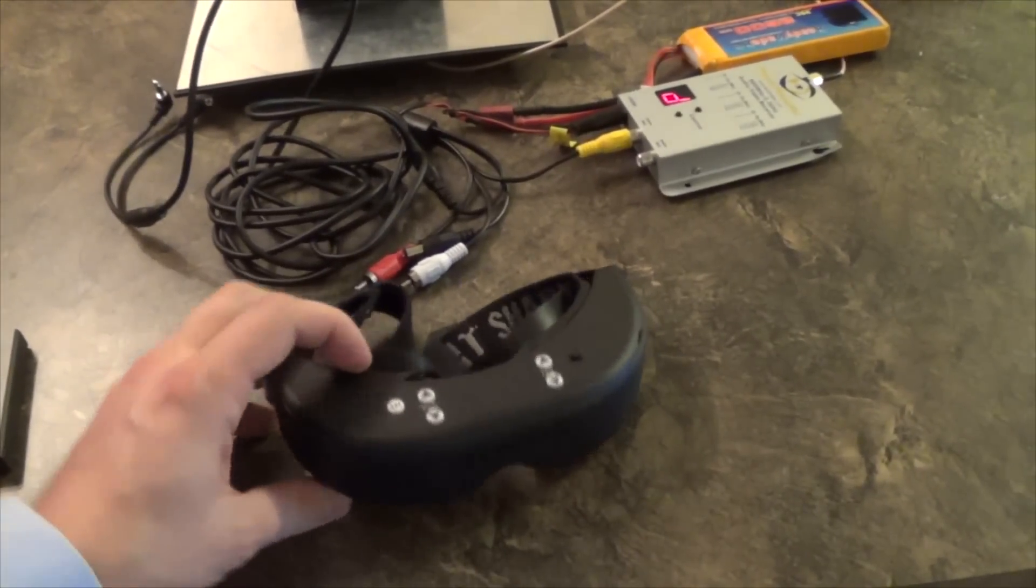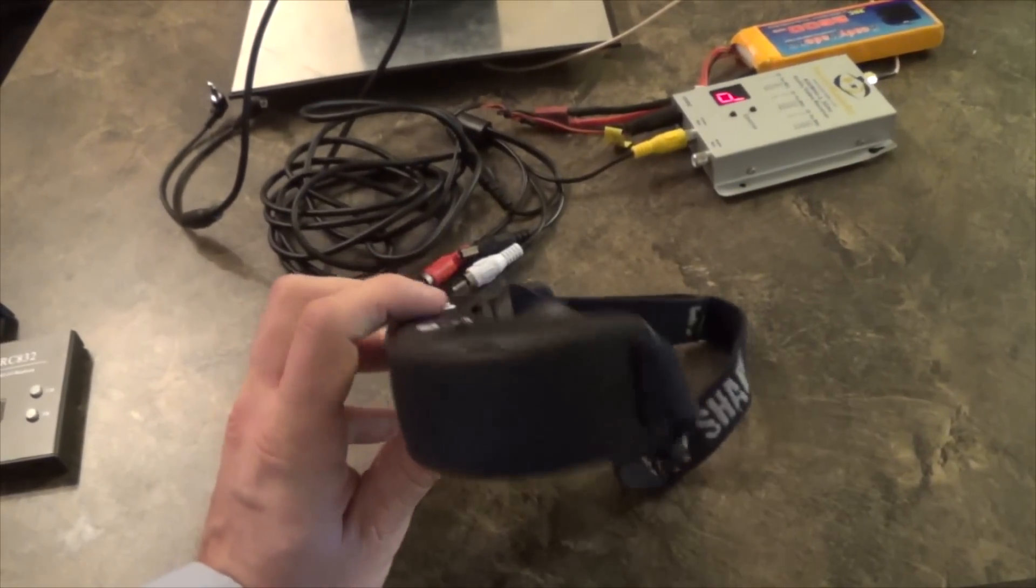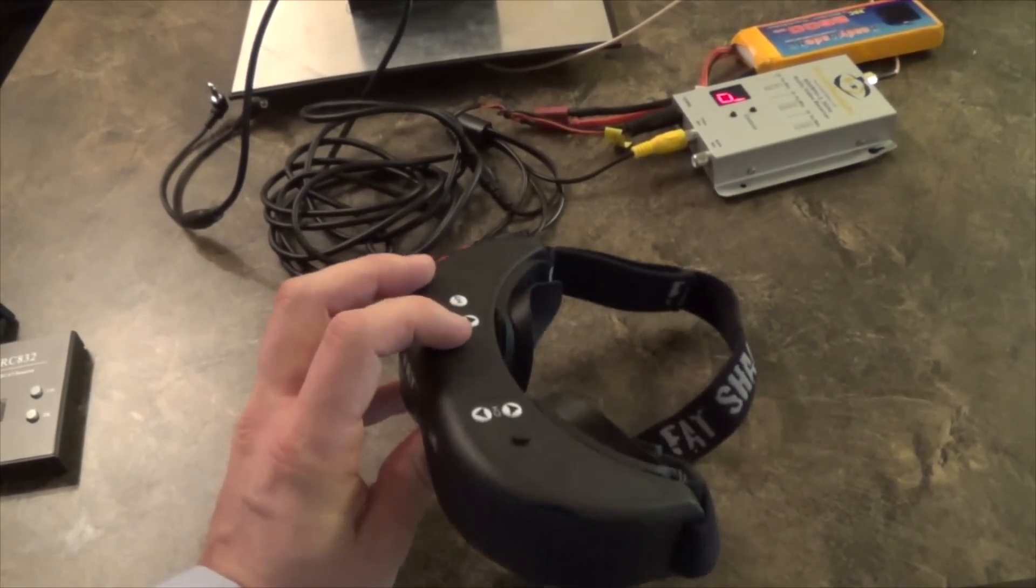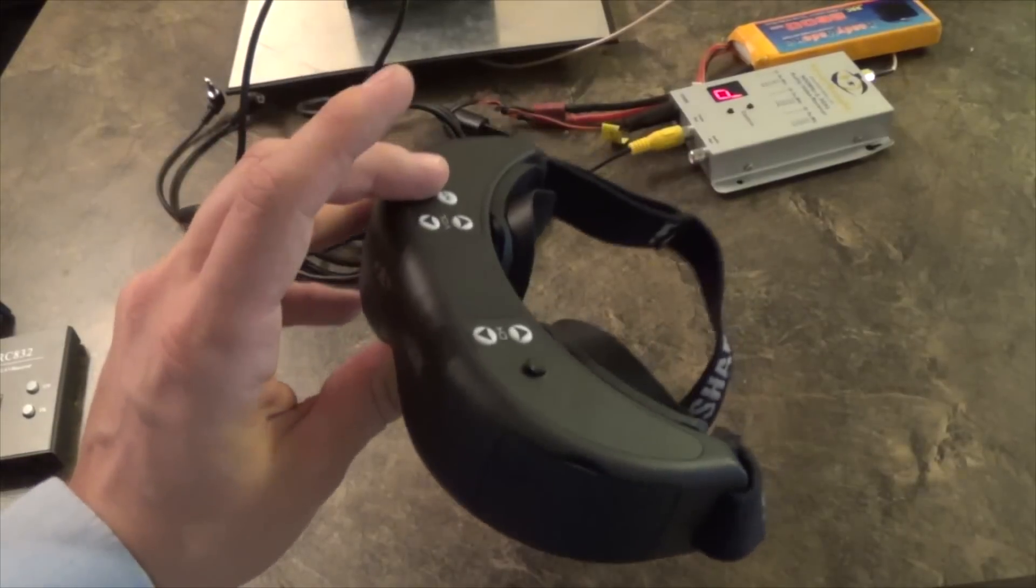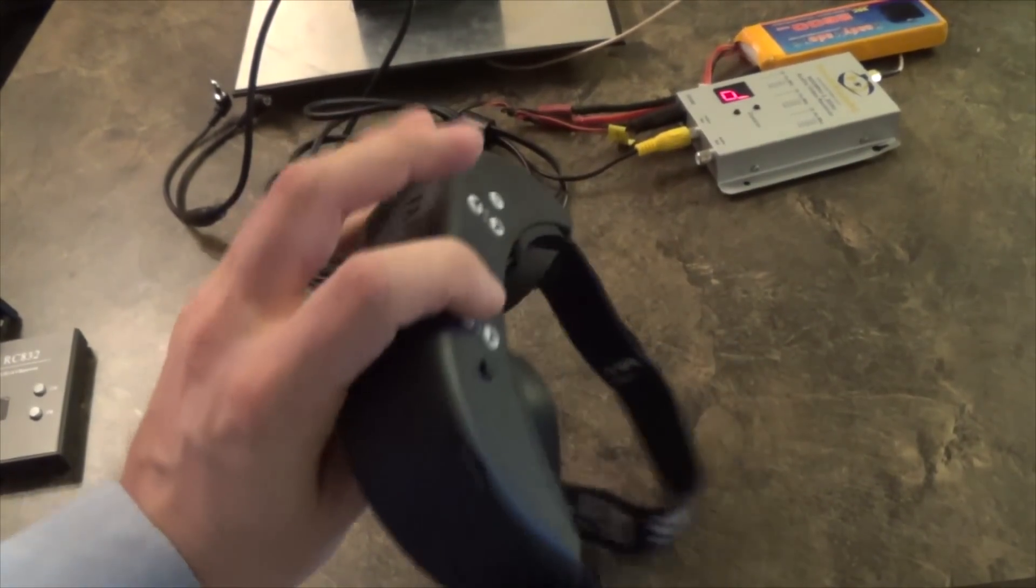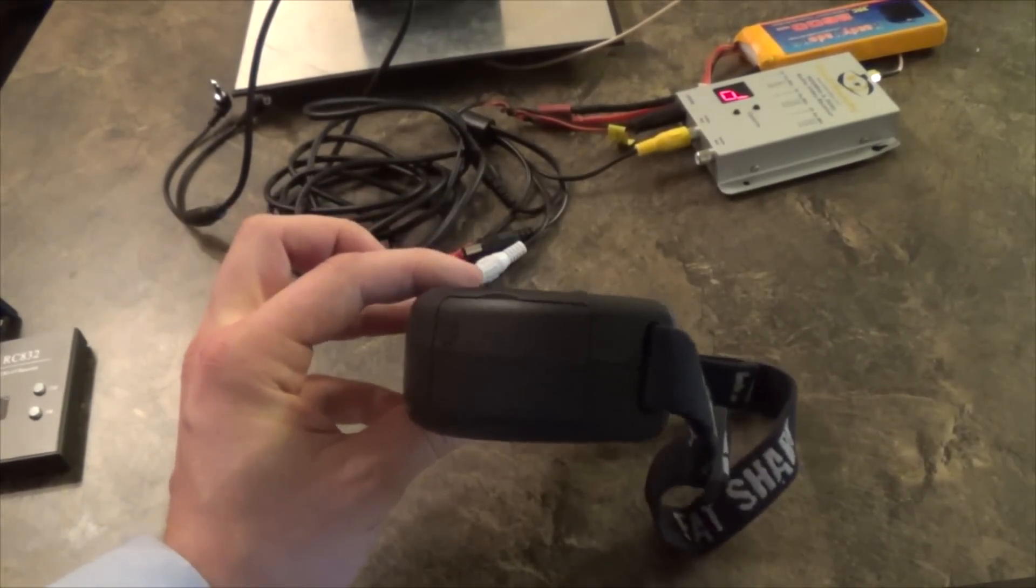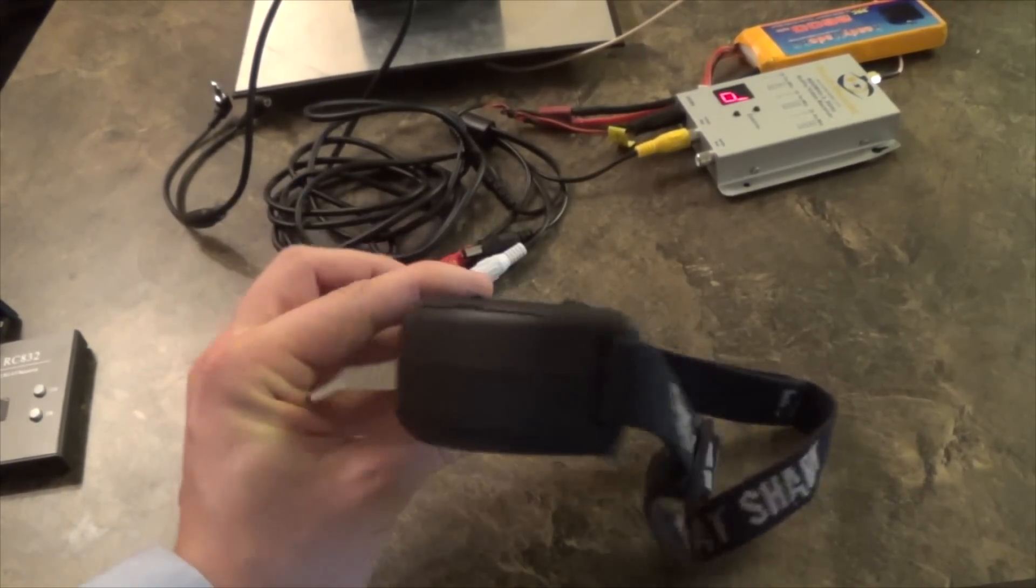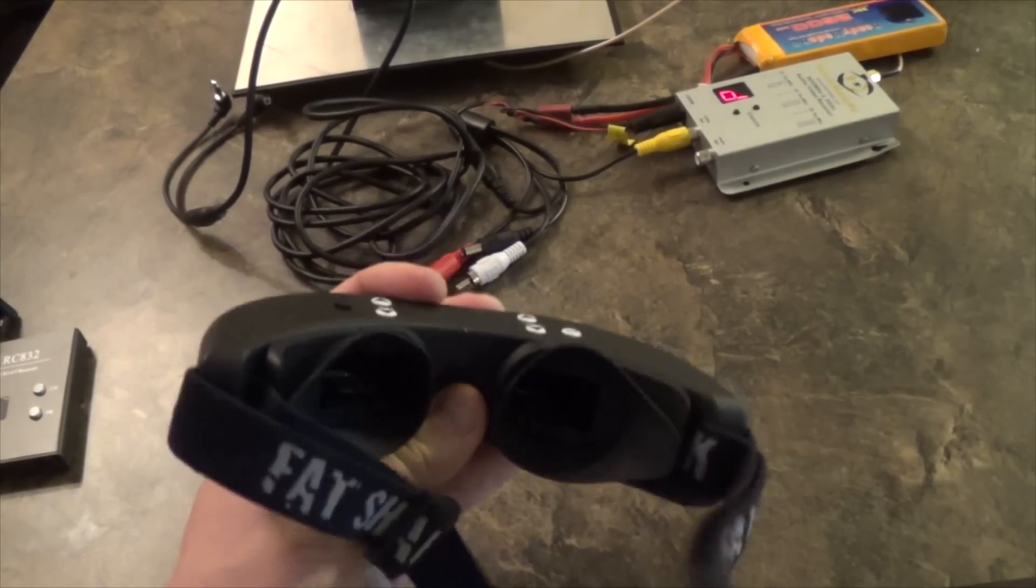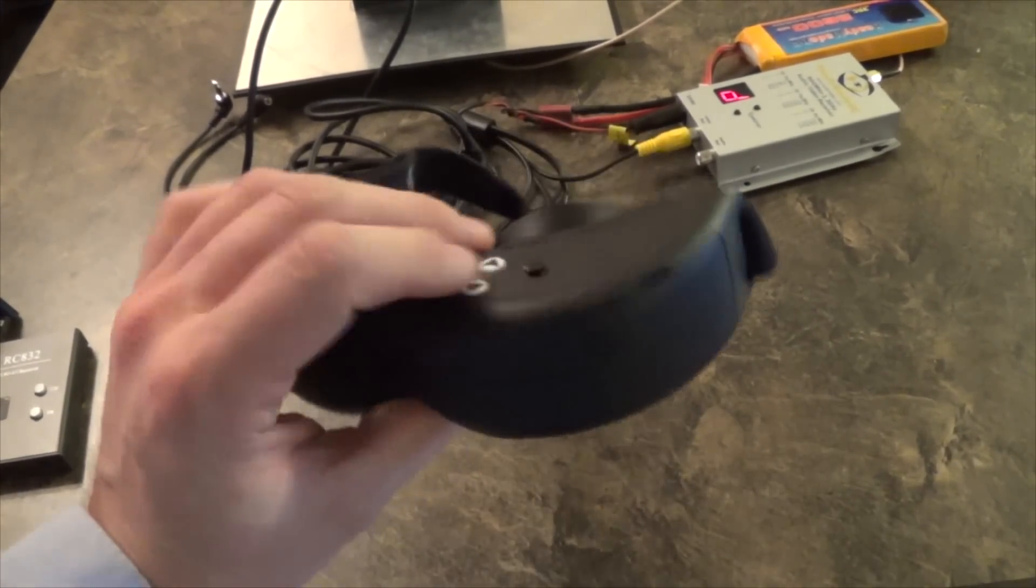What these Fat Shark goggles do typically, I don't have the system on here because I like to go long range, but you can have an antenna mounted here. You can have a head tracker system in it as well. You can have a battery pack that's isolated for it too. So this can be a total isolated system without any wires or whatever. That's a good system to have.